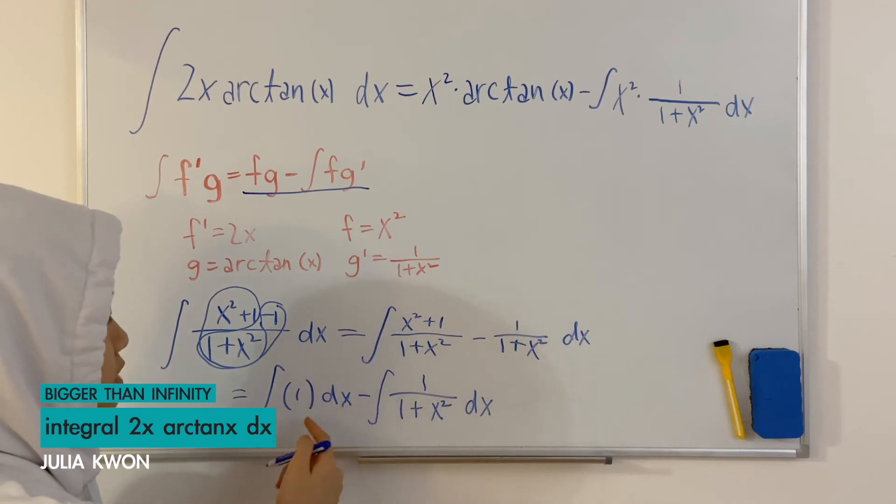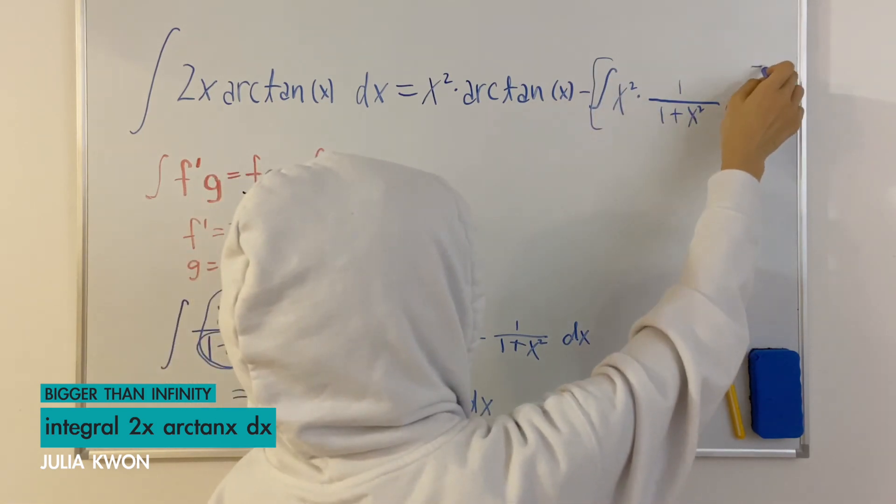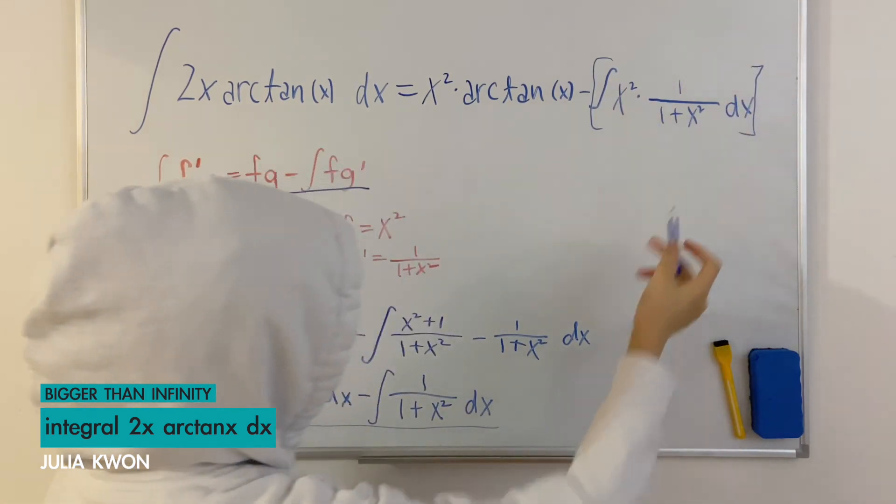Now we can just substitute what we found into the integral of x squared over 1 plus x squared dx.